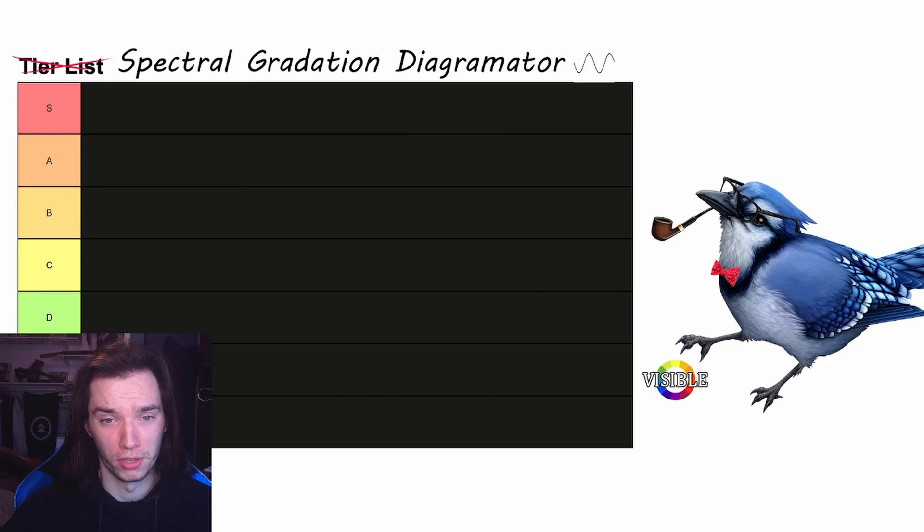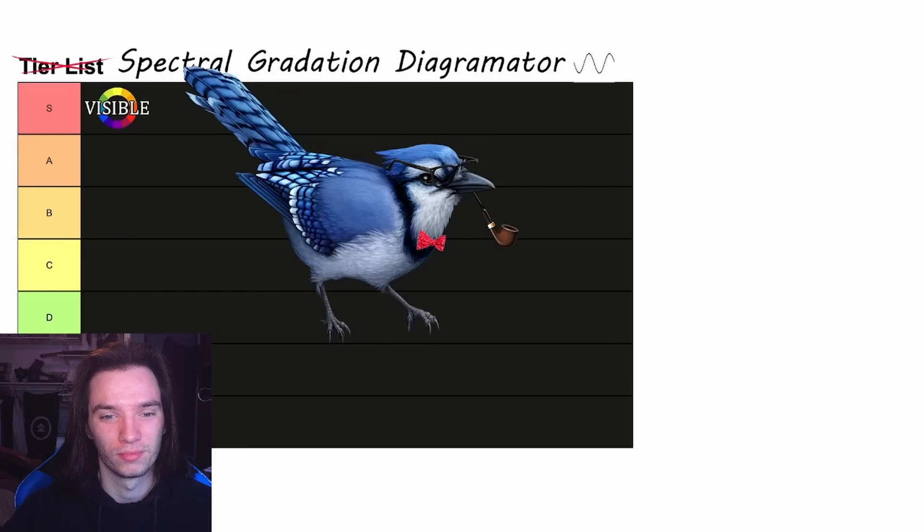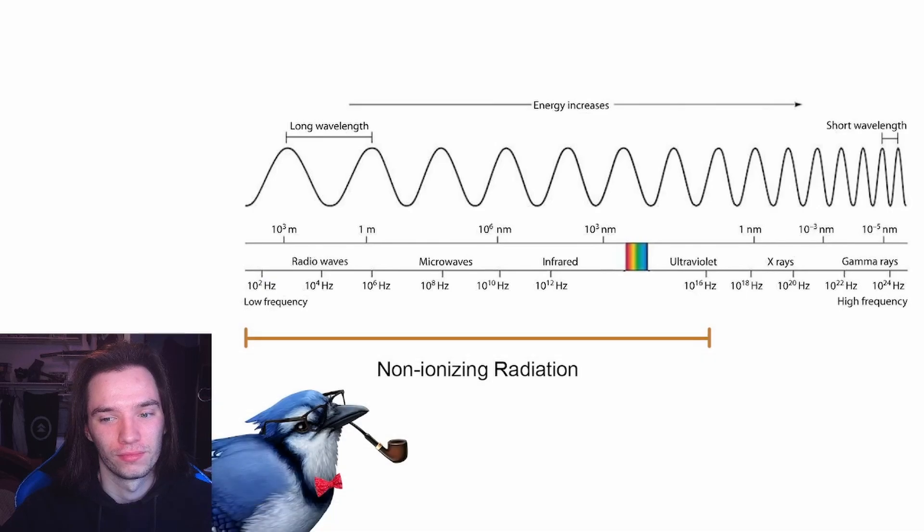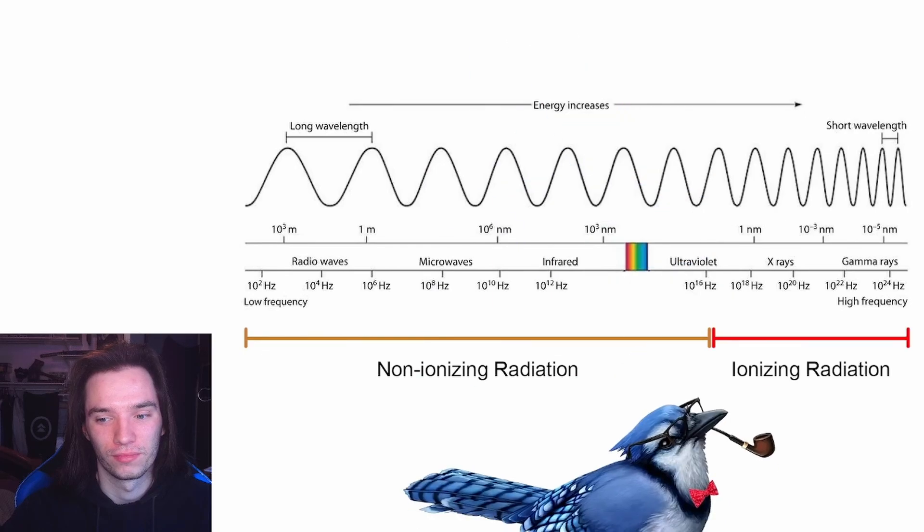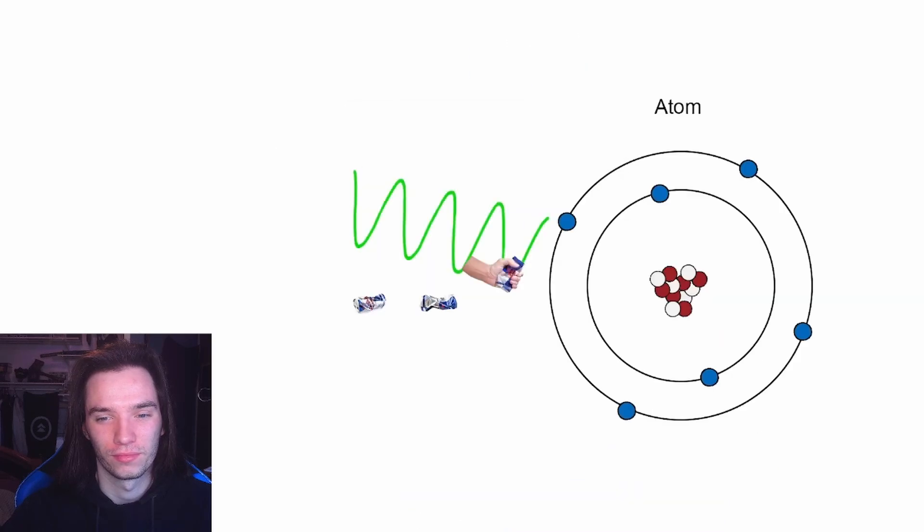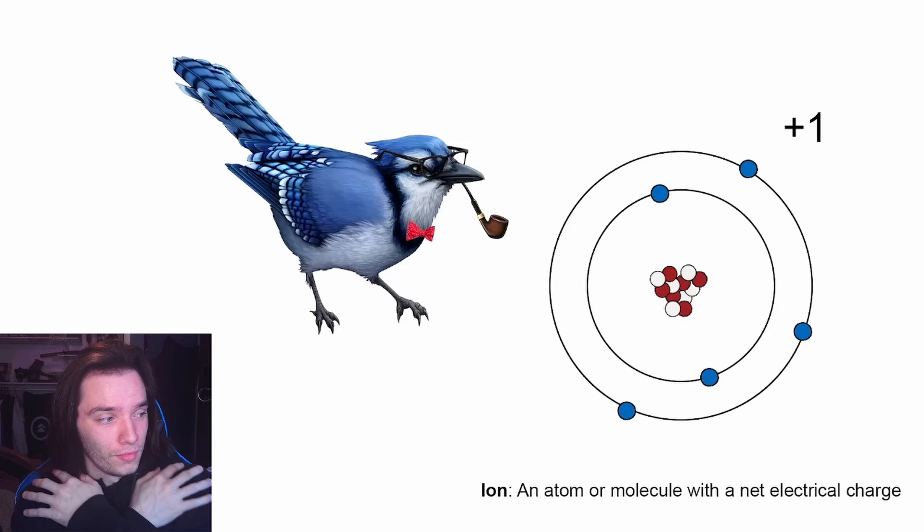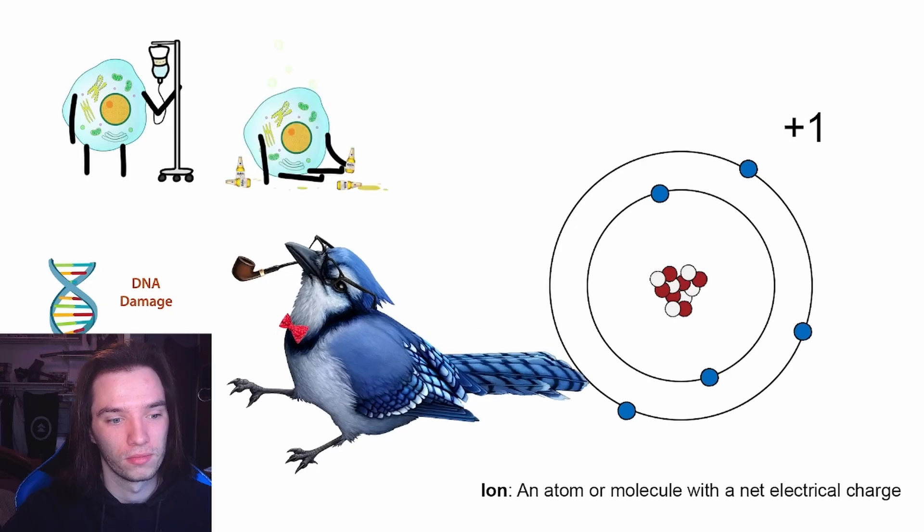At a rate of nearly 100%. Because of this, visible light kicks off our spectral gradation diagram-ator in the S tier, for screw God for cursing us with eyes and forsaking us with a world of horrid sights. Down here on this end of the spectrum, we have what is called non-ionizing radiation, including the dreadful visible light. And up here, where things start to get crazy, is what we call ionizing radiation. This type of radiation has sufficient energy to rip individual electrons from the very atoms of your soft, squishy, pathetic body.